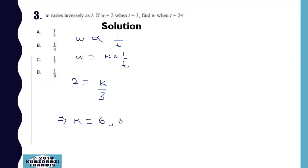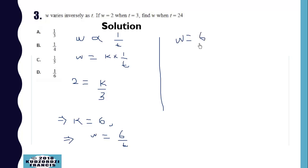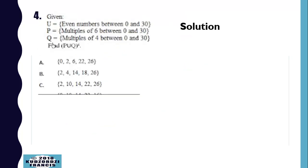So our equation now becomes w is equal to 6 over t. When t equals 24, we substitute to find w to be 6 over 24, which is equal to 1 over 4.